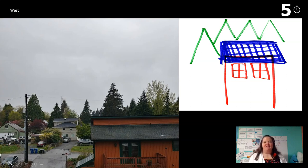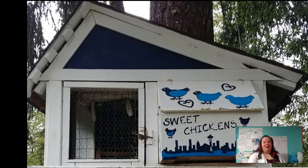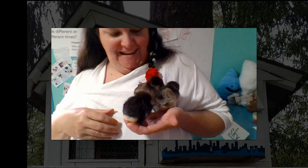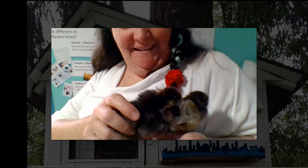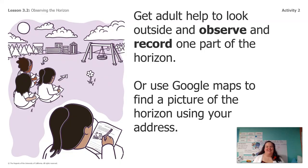I forgot — one of the things I noticed when I was out taking pictures is the door of my chicken coop. I completely forgot that I had drawn a horizon on my chicken coop. And since I'm already talking about the chicken coop, I wanted to share something with you guys. Look at this — I have three baby chicks! Aren't they the cutest? I thought that would make you smile. It doesn't have anything to do with our lesson, but I wanted to share it with you anyway.